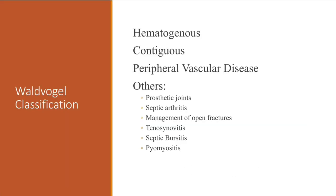There are two classifications for osteomyelitis. The most common one is whether you have osteomyelitis that is hematogenous or contiguous, and whether it is acute or chronic. There's another classification that is rarely used called the Mater's Sperling classification, but most osteomyelitis is divided between hematogenous and contiguous.